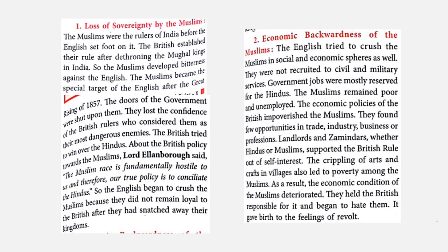First: loss of sovereignty by the Muslims. The Muslims were the rulers of India before the English arrived. The Mughal rulers, who were Muslims, ruled India before the British established their rule by dethroning the Mughal kings. As a result, the Muslims developed bitterness against the English. The Muslims became the special target of the English after the Great Uprising of 1857.